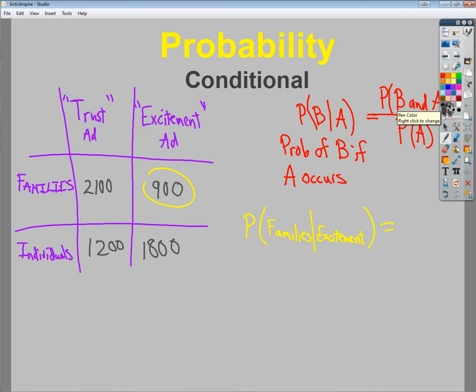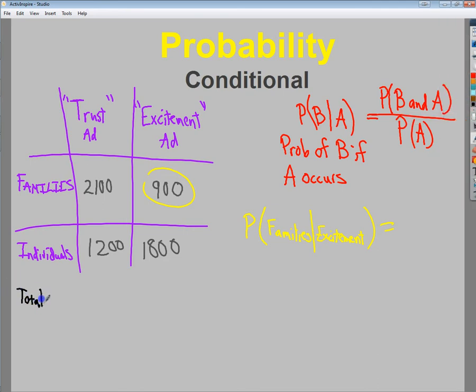So the total would be 2,100 plus 900 plus 1,200 plus 1,800. I should get somewhere around 6,000. So that's my total number of ad responses.